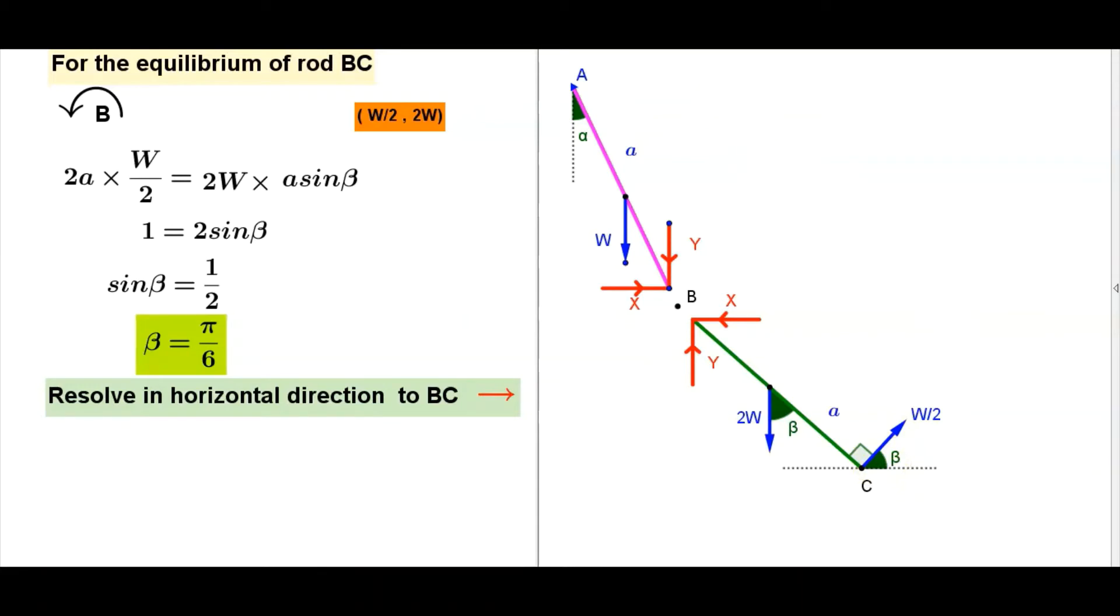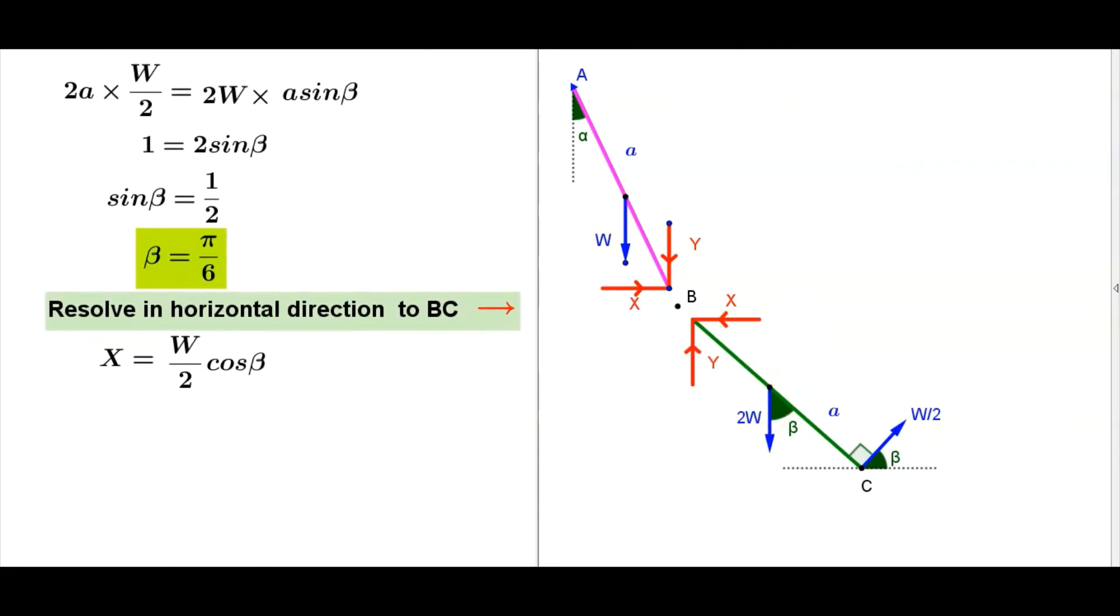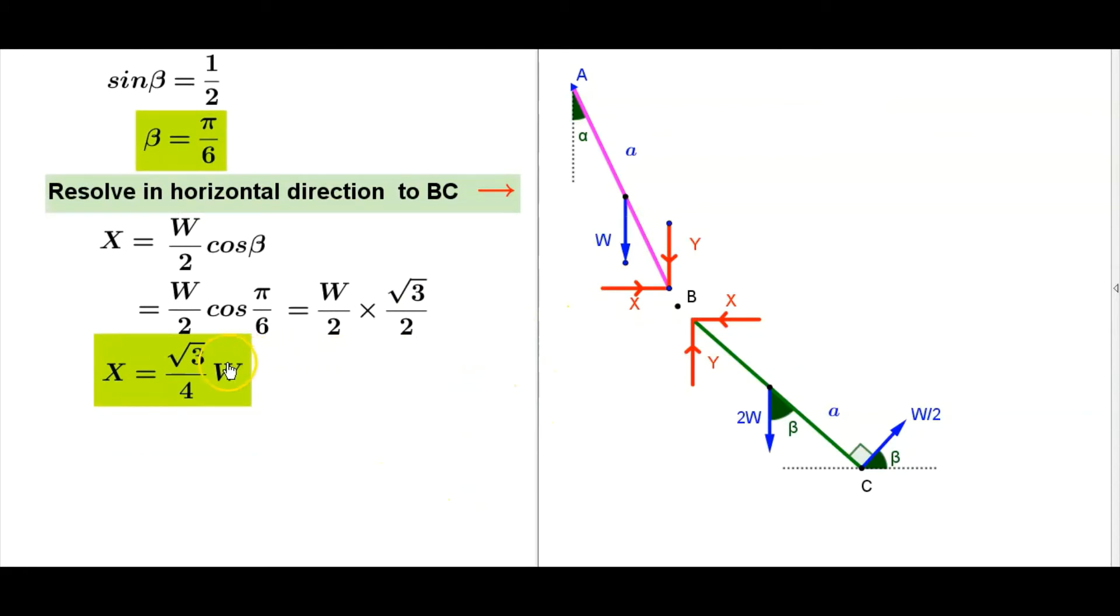When resolved horizontally, X equals W/2 cos beta. Others are vertical forces, not coming. W/2 times cos beta, cos pi by 6, W/2 times cos pi by 6 equals root 3 by 2. Therefore X equals root 3 by 4 times W.